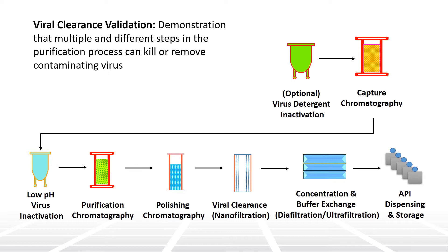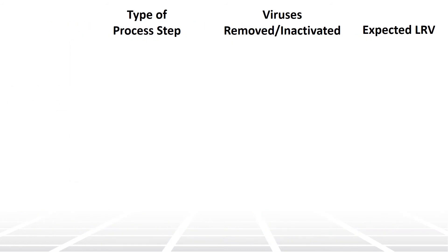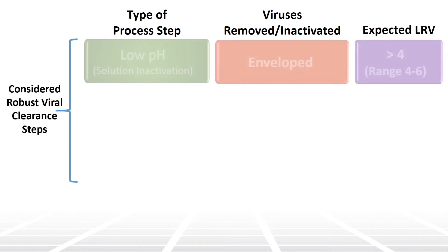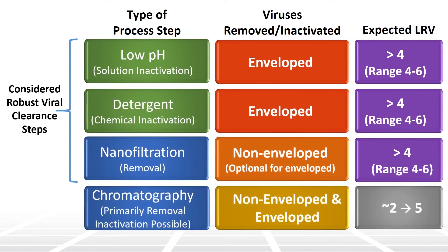Worldwide regulatory agencies require these studies for mammalian-derived therapeutics. A viral clearance validation study demonstrates that specific purification steps can remove or inactivate virus contaminants that could potentially be introduced into raw materials or anywhere in the upstream and downstream process. A process must demonstrate both removal and inactivation of virus across multiple purification steps that use different mechanisms of action. The most common steps evaluated for antibody therapeutics are shown here.